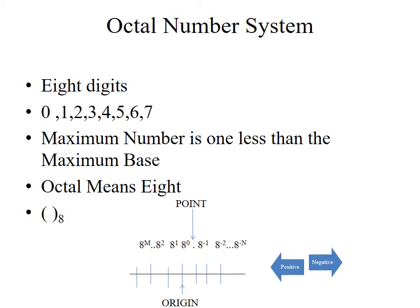Moving on to the next number system, the octal number system has 8 digits: 0, 1, 2, 3, 4, 5, 6, and 7. The maximum number is 1 less than the base, and here the base is 8. It is represented with a subscript 8 in brackets. In the diagram, the only change is that instead of 2, we have written 8, because the base of the octal number system is 8. Rest all things are the same.